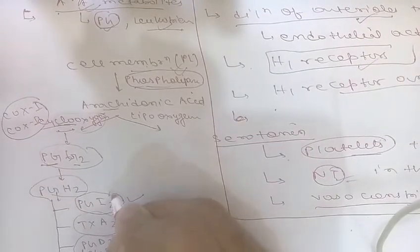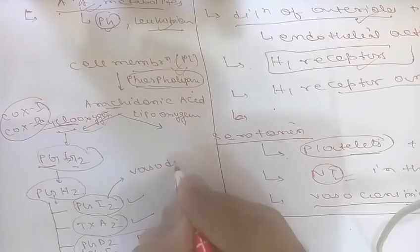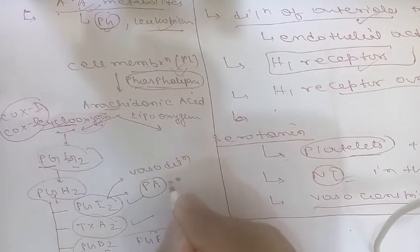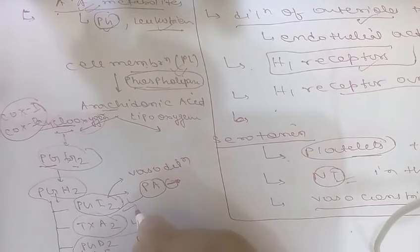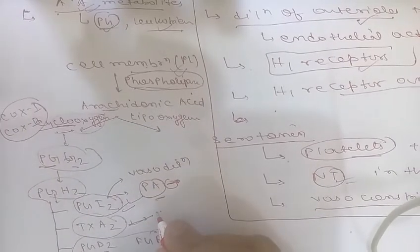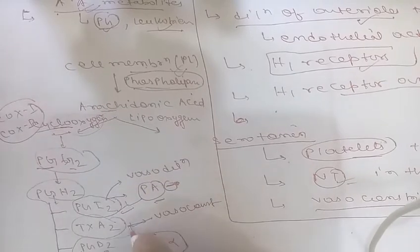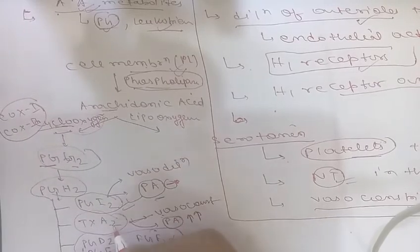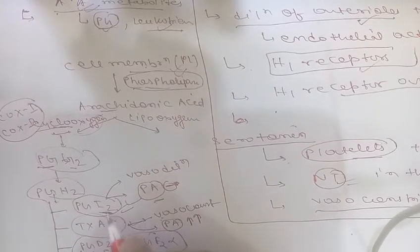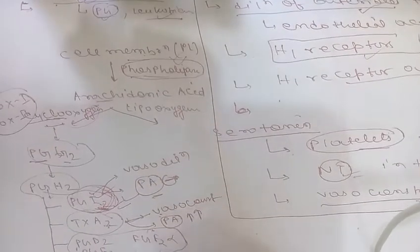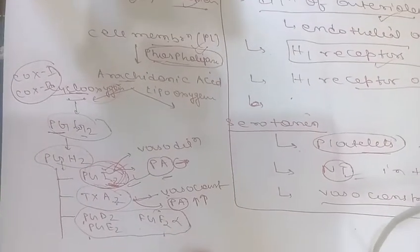Prostacyclin (PGI2) causes vasodilation and inhibits platelet aggregation. Thromboxane A2 (TXA2) has the opposite effect — it causes vasoconstriction and promotes platelet aggregation. So thromboxane A2 and prostacyclin are antagonistic to each other.